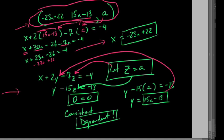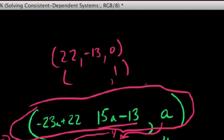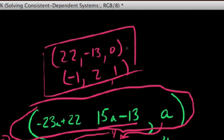But these are our infinitely many solutions right here. If we plugged in a with 0, we'd get, say, 22 comma negative 13 comma 0. If we plugged in a as 1, we'd say, well, then we get negative 23 plus positive 22 is negative 1. And if we plugged in 1 for a for our y here, 15a minus 13, 15 times 1 is 15 minus 13 is 2. Both of these solutions, if you plug them back in the original system, you see they work. There are infinitely many solutions depending upon what this last a value equals or our z value.